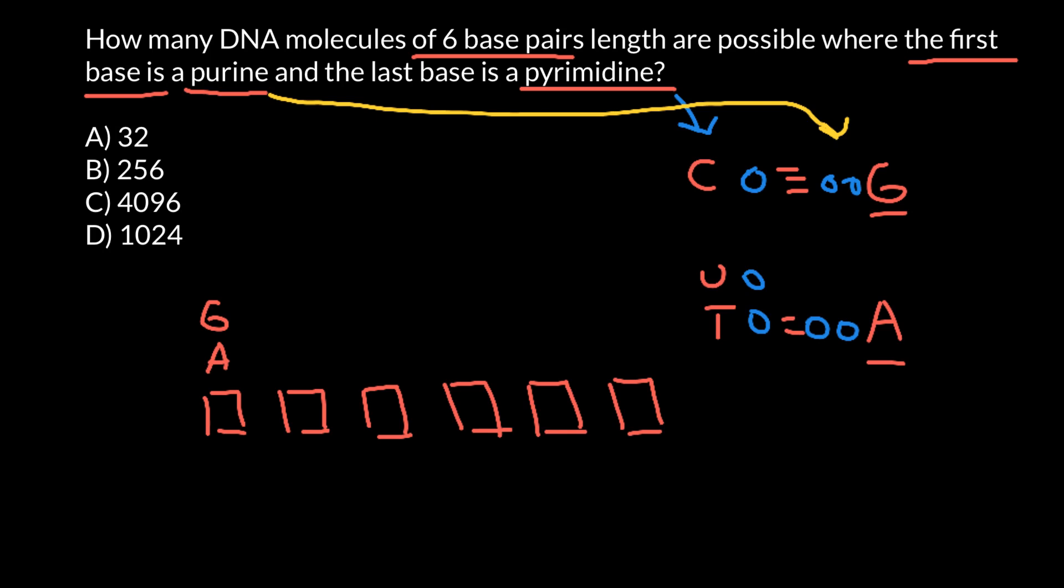It's going to be purine, and the last base is pyrimidine. It can be cytosine or thymine. And why I do not put uracil here? Because we are told that this is DNA, and in DNA we do not have uracil.